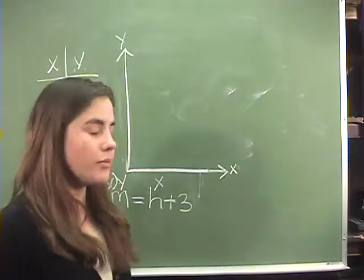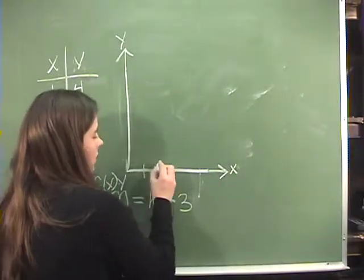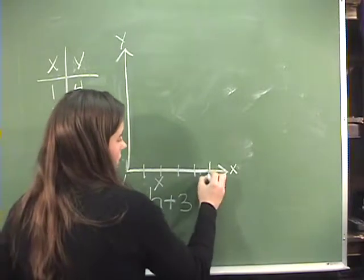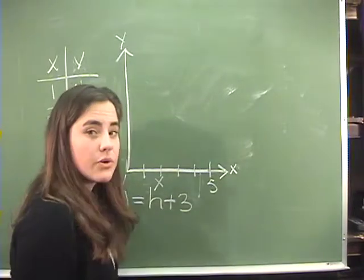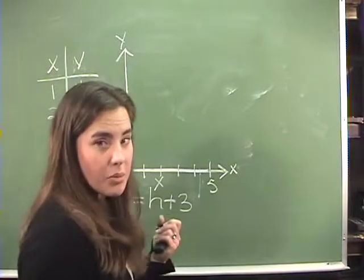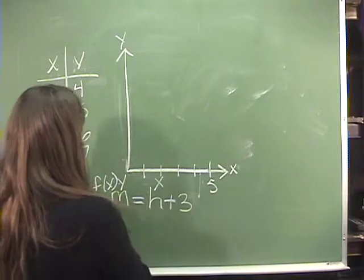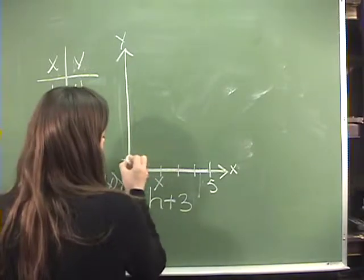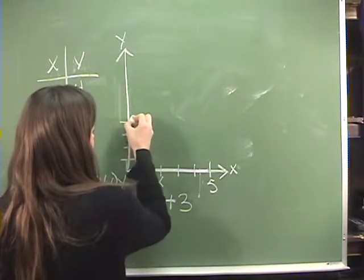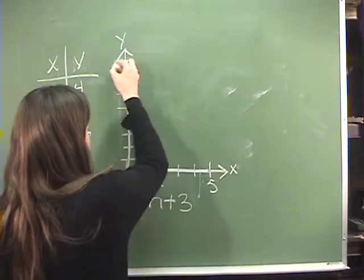But you have to be sure and label your axes: one, two, three, four, five. That's as high as I really need to go because that's all the points that I'm plotting. Do the same thing on the Y axis, only this time you need to go all the way to eight because that's the highest one you have: one, two, three, four, five, six, seven, eight.